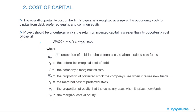Here we have the formula for the weighted average cost of capital. It's the weight of the debt times one minus the tax rate, plus the weight of the preferred equity times the cost of the preferred equity, plus the weight of the common equity times the cost of the common equity.